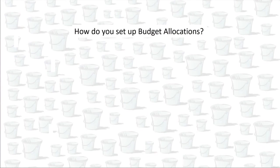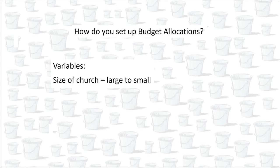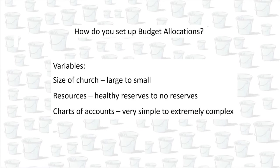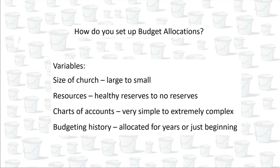Churches come in so many flavors, it's hard to give any hard and fast budgeting rules. You've got large churches and small churches, and they have very different budgeting needs. Churches with healthy bank accounts can have local funds just sitting around with money in them without causing a hardship, while a church that has barely enough each month to pay the bills needs a different system. Also, each church has a unique chart of accounts. Some churches simply take every expense out of the church budget bucket. Others give every single item its own bucket, ending up with dozens. Some churches have been allocating for years and others have never allocated, so this would be brand new to them. That said, I can give you some general principles so you can start making your list.